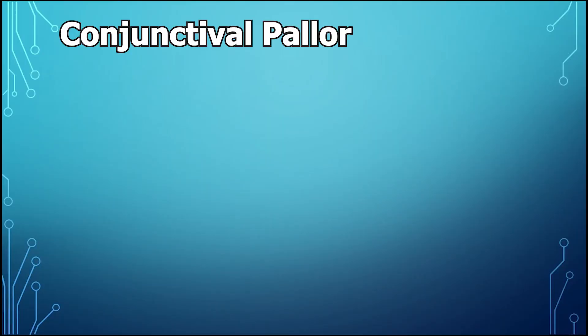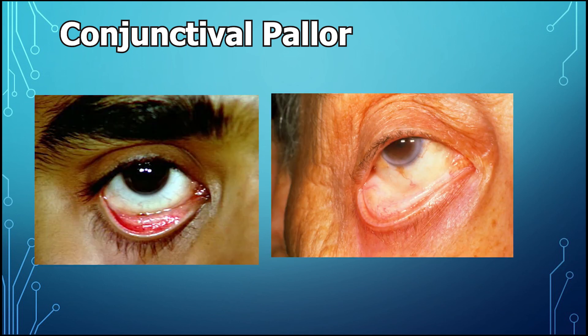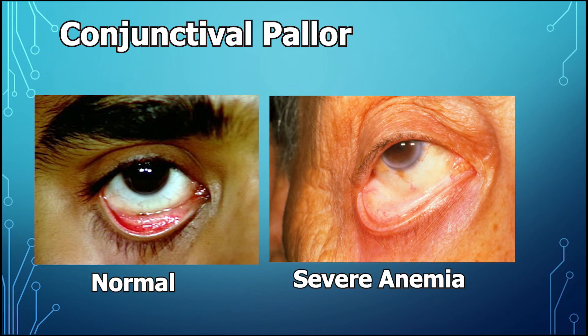One other small detail: in some question stems you'll see a description of conjunctival pallor. What they're trying to tell you is to think about anemia. Because the conjunctiva has blood vessels, if you have less blood, you'll have less blood flowing through them and therefore less color. That's going to be it for conjunctivitis. A PDF of all this info as well as Anki cards are in the description to help you study. See you next time.